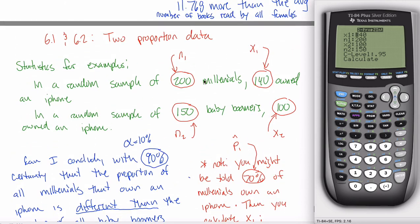To make a 2PropZInterval, you need to know X1, N1, X2, N2. And it's worth pointing out that you have freedom on which one are your ones and which one are your twos. But what it's going to do is it's going to find the difference. It's going to take the ones and then it's going to subtract the twos. So I'm going to put in millennials for my ones, but that's kind of arbitrary. And then I'll tell it my level of confidence, which is 99%.